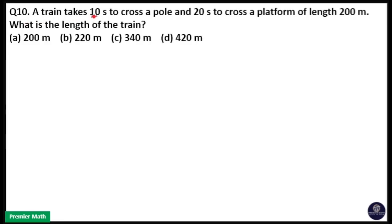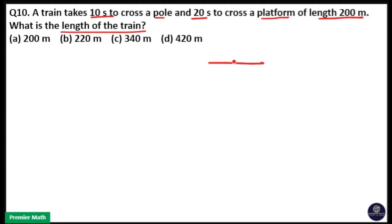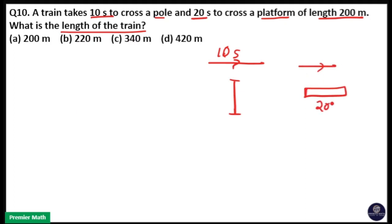A train takes 10 seconds to cross a pole and 20 seconds to cross a platform of length 200 meters. What is the length of the train?